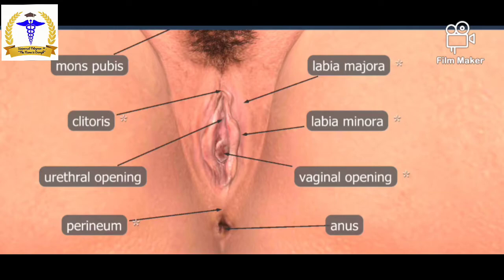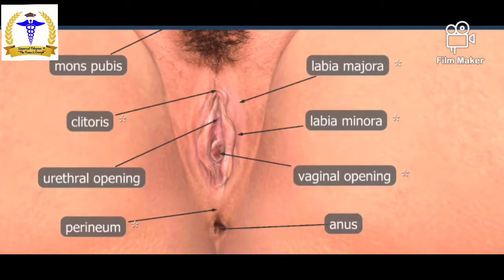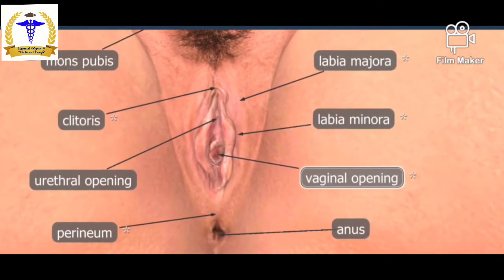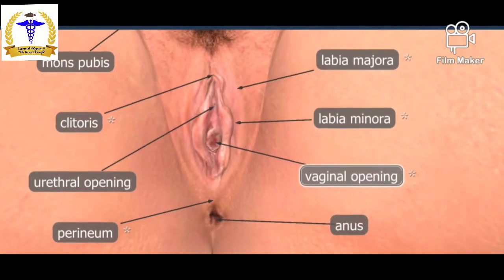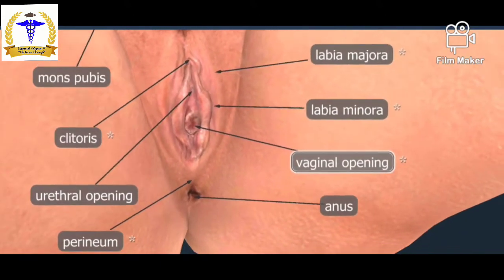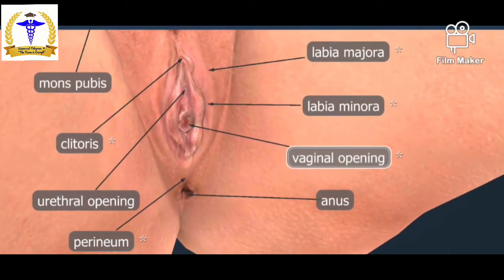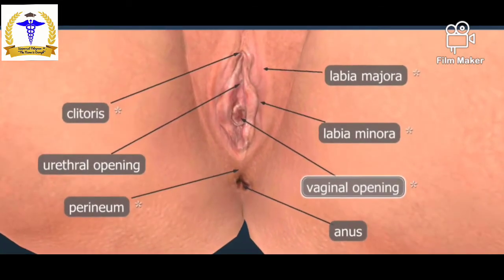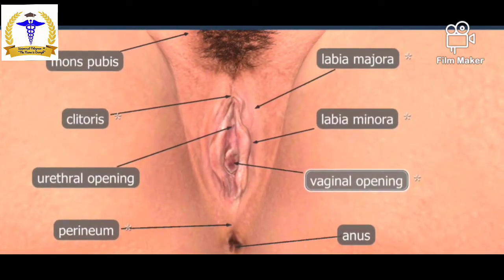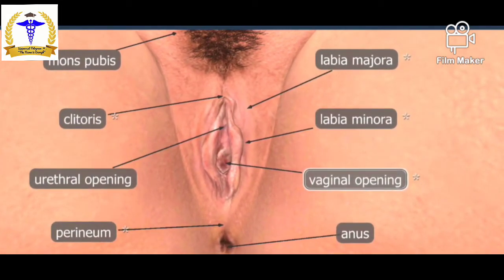Then we will discuss the external reproductive organs: mons pubis, clitoris, urethral opening, perineum, labia majora, labia minora, vaginal opening, and the anus are the external reproductive organs of the female reproductive system.